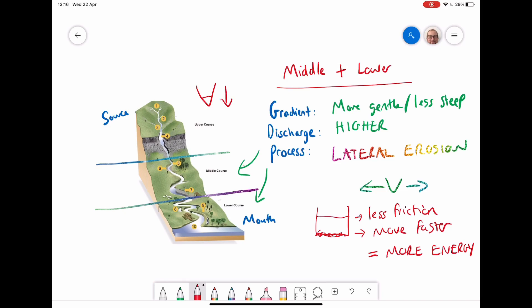And therefore, where in the upper course we had this V-shaped valley where it was eroding downwards, now in the middle course, we get the river starting to widen and becoming more of a flattened U-shape. And by the time we get all the way down to the mouth, it's very wide and deep.